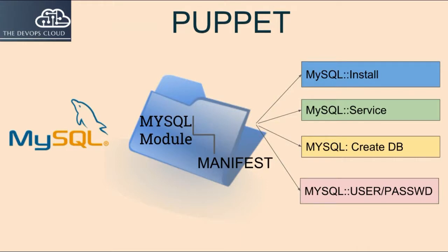For example, Infrastructure as Code capabilities included with Puppet can install MySQL server, verify that MySQL is running properly, create a user account and password, set up a new database, and remove unneeded databases.